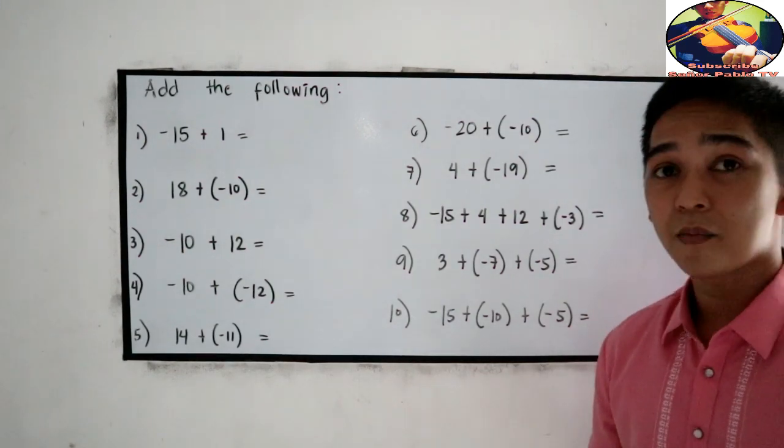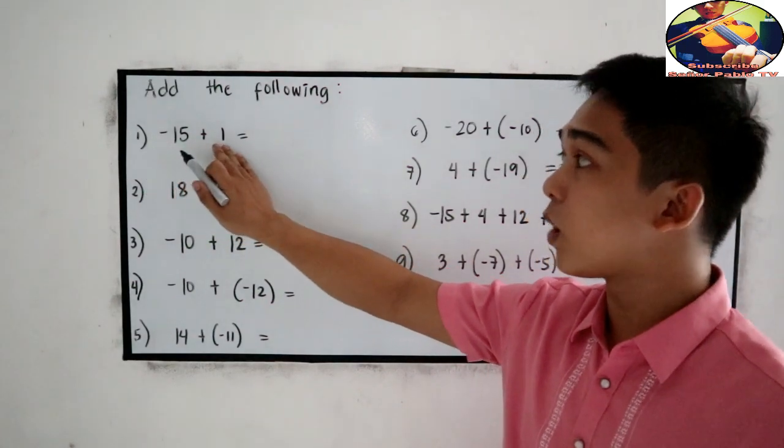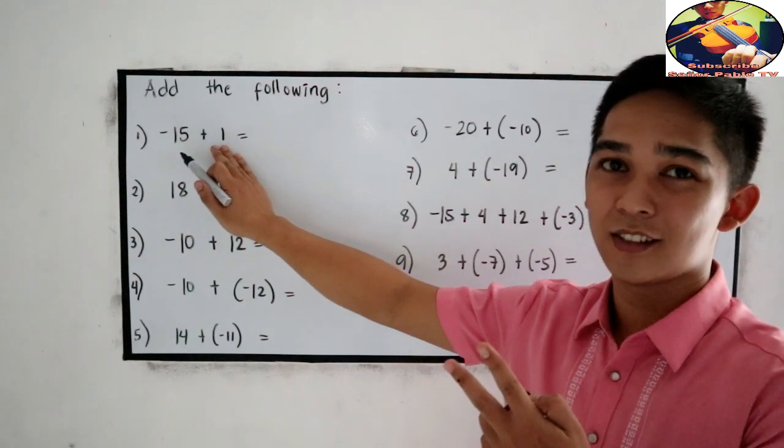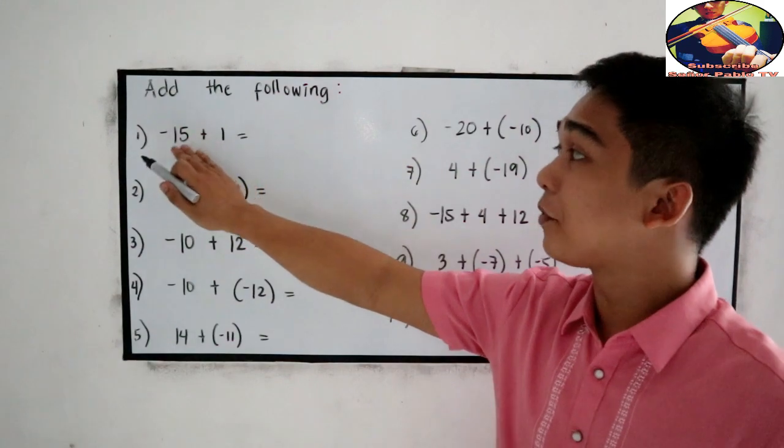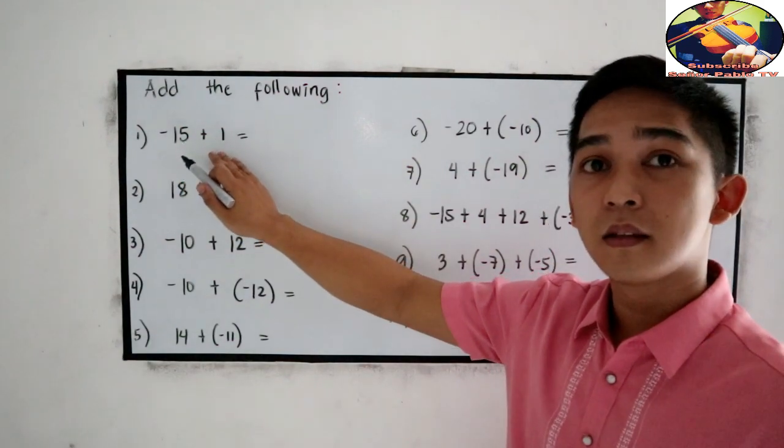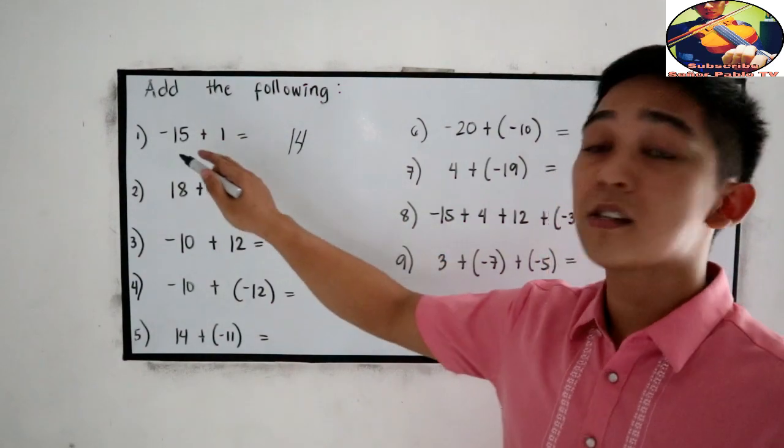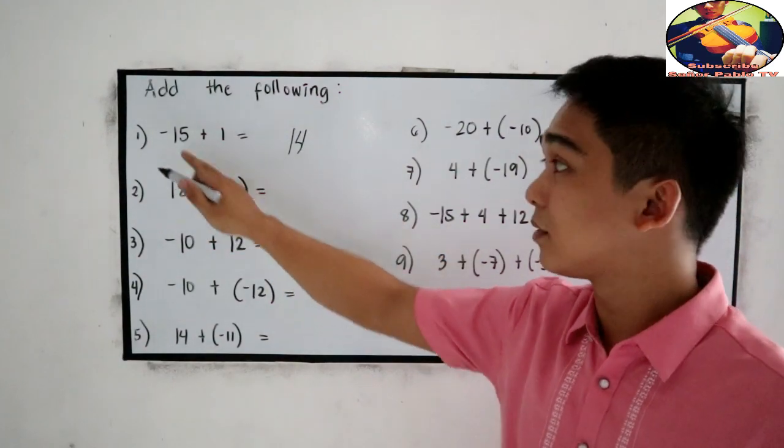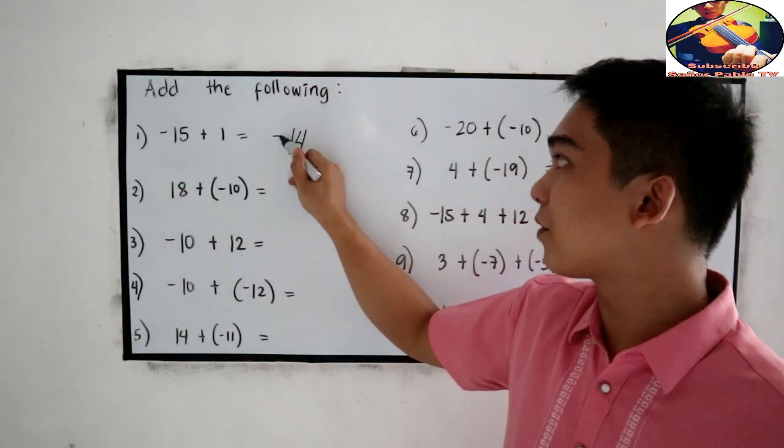Let's try number 1. Negative 15 plus 1. So our rule is, if they have different signs, subtract the numbers. So 15 minus 1, that is 14. Then copy the sign of the greater absolute value. So 15, negative 15, so negative 14.